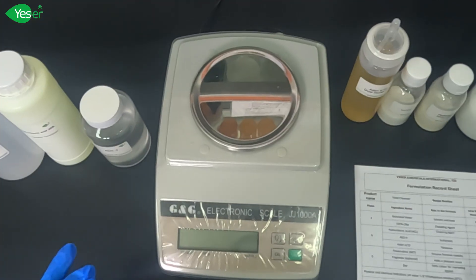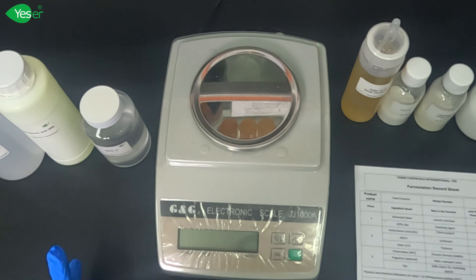Now let's see how xanthan gum, HPMC, salt, and Aslan 012 perform as thickeners in this formula.